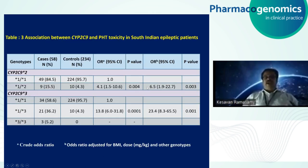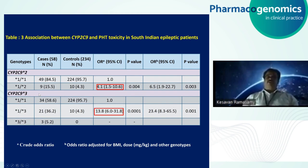When we estimated the odds ratio for each genotype comparing with the wild type, the star 1 / star 2 genotype had a four-times risk for developing phenytoin toxicity. The star 1 / star 3 genotype had a 13.8 times risk. After adjusting for confounding factors including BMI, dose, and other genotypes, the adjusted odds ratio was 23 times — still much higher — for developing toxicity.